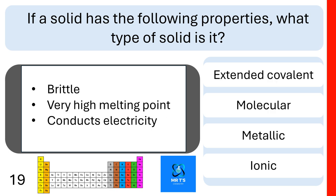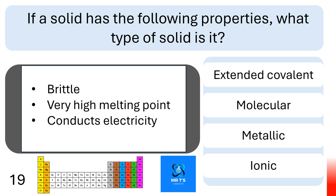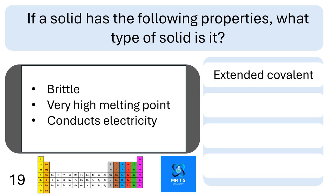Question eighteen: if a solid is brittle, has a very high melting point, and conducts electricity, what type of solid is it? It's a bit tricky. Is it extended covalent, molecular, metallic, or ionic? This is extended covalent — it is actually a special type called graphite, which is an exception to most extended covalent solids in that it conducts electricity.